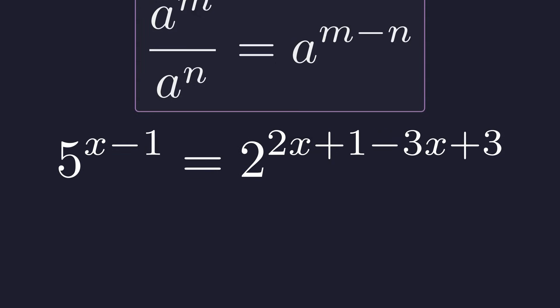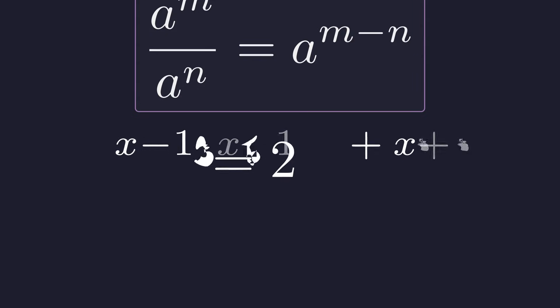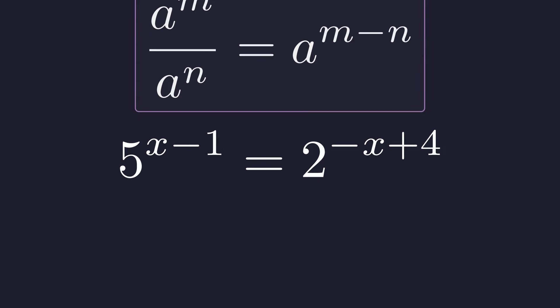Distributing the negative sign gives us 2x plus 1 minus 3x plus 3. Combining like terms in the exponent, we get 2 to the power of negative x plus 4.